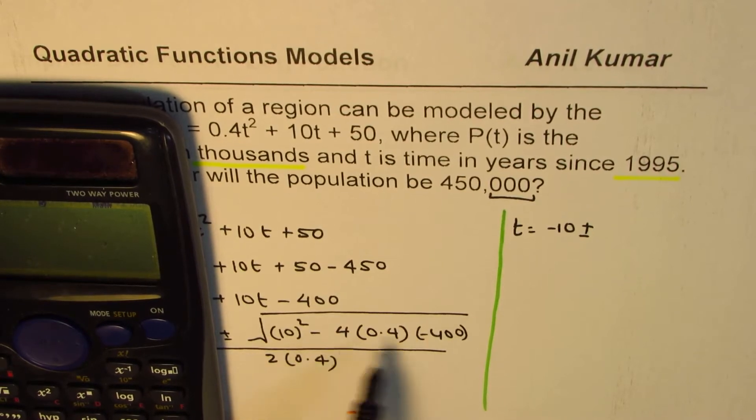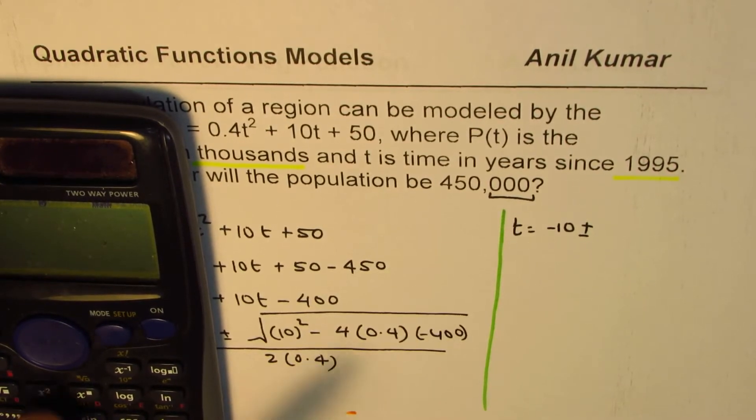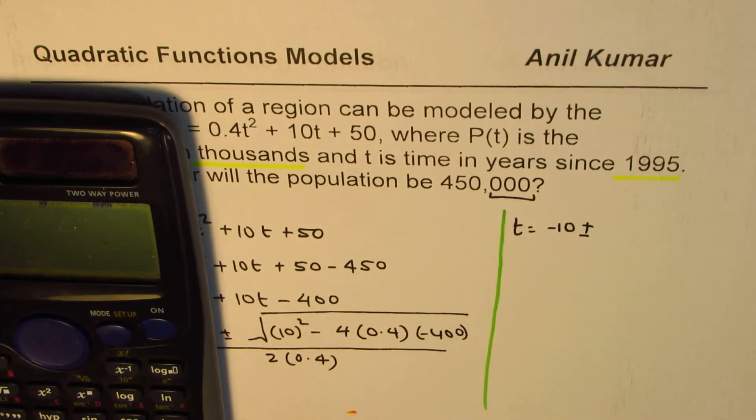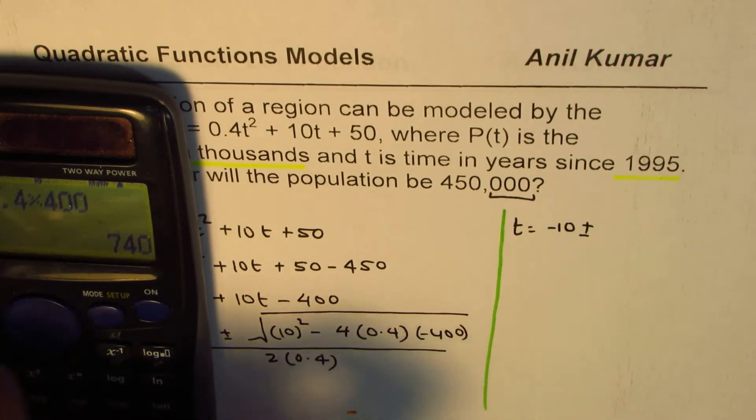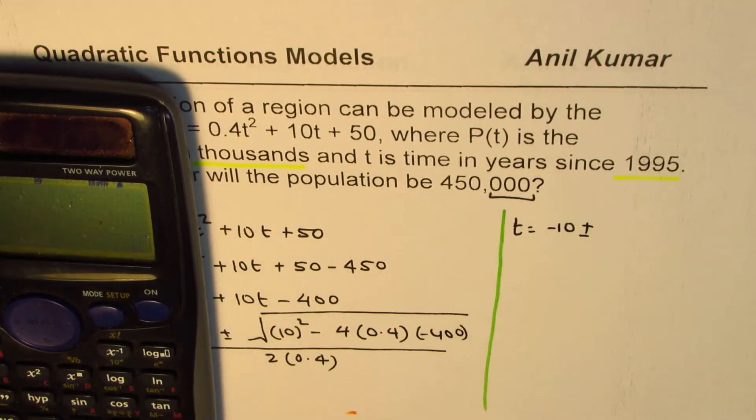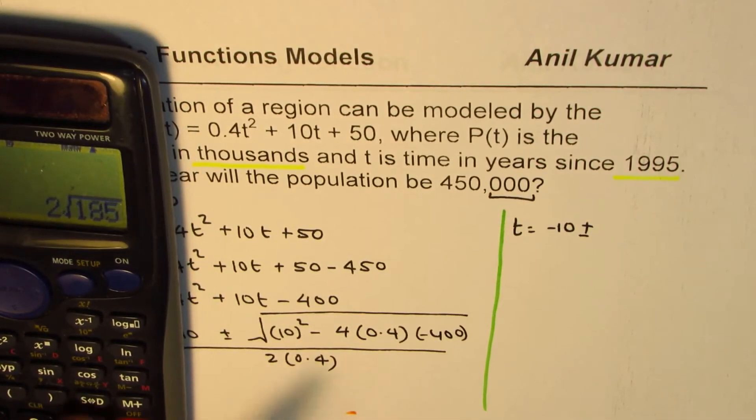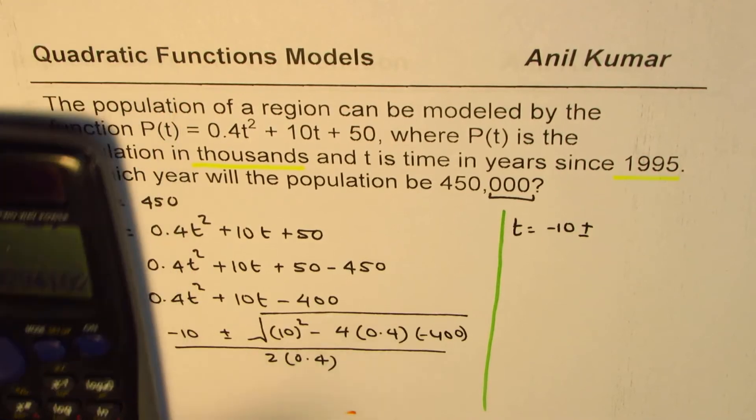So it becomes, this negative and negative will make it positive. So we can write 10² plus, since this is positive, 4 times 0.4 times 400. Did I do square root? Well, I didn't do square root. So let me do square root of this. Square root of the answer equals that much. Let's write this in decimals. In decimals it is 27.2.